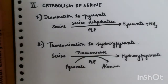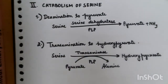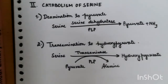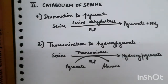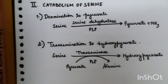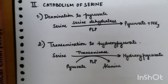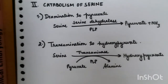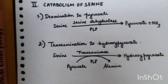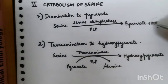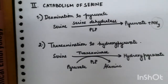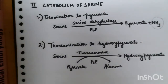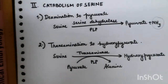Now let's talk about catabolism of serine. The first pathway is deamination to pyruvate: serine gives pyruvate in the presence of enzyme serine dehydratase and PLP, and also gives ammonium. Since pyruvate can be converted into glucose, serine is confirmed as a glucogenic amino acid.